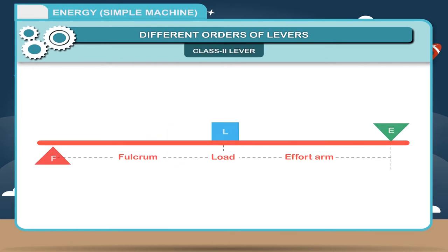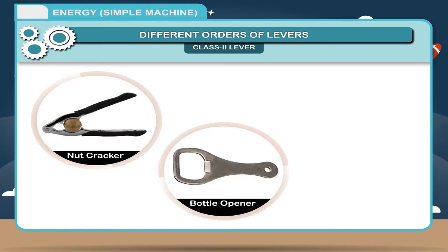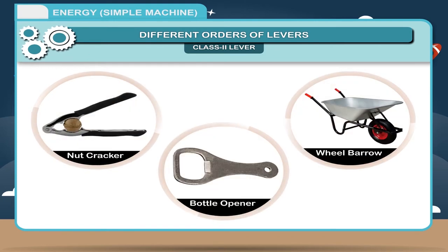Class 2 lever: In this class of lever, the load L lies between the fulcrum F and the effort E. Examples: A nutcracker, a bottle opener and a wheelbarrow are the examples of class 2 lever.